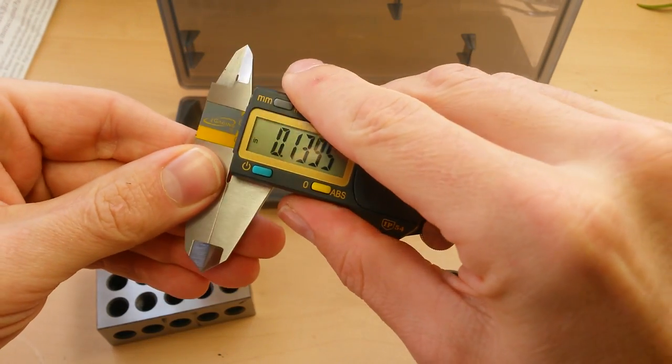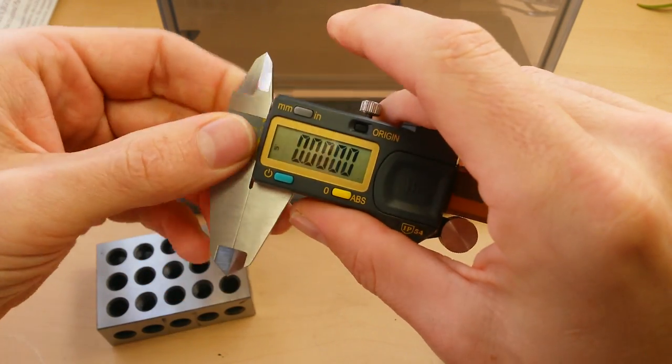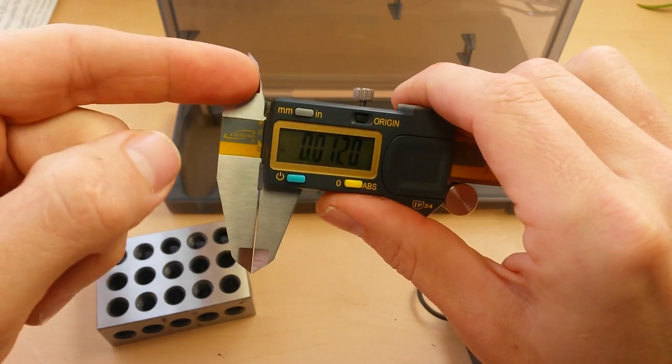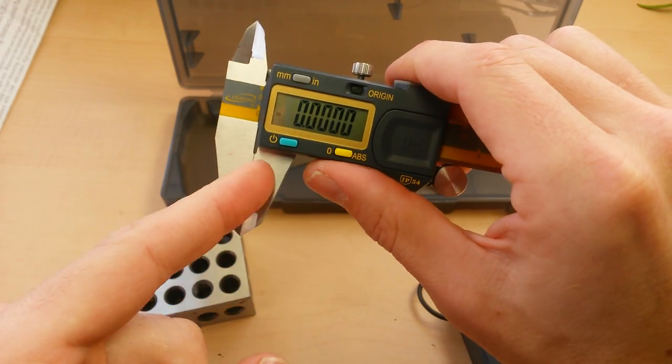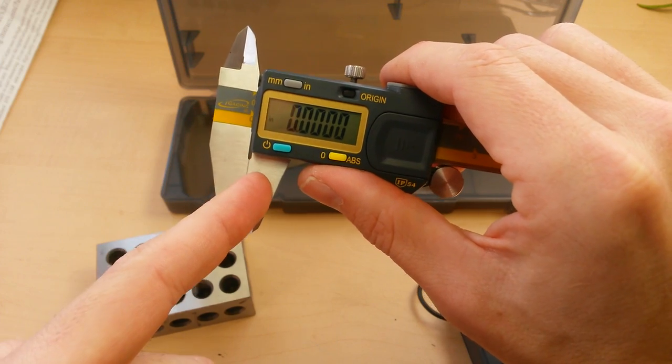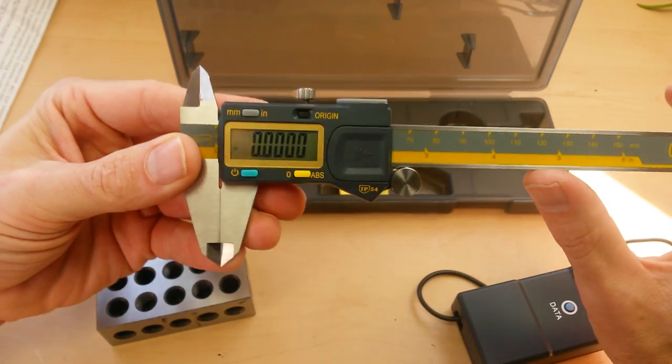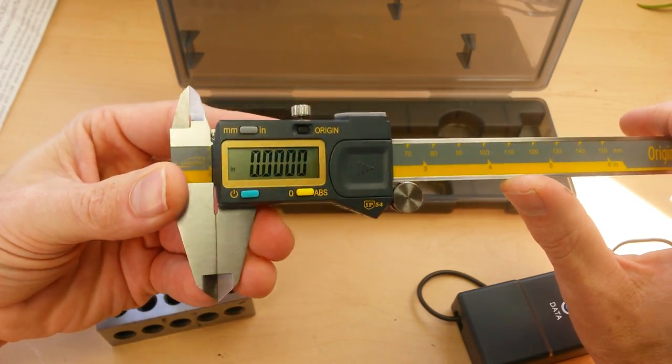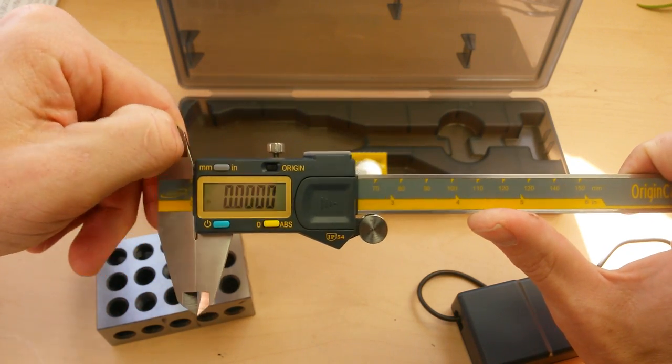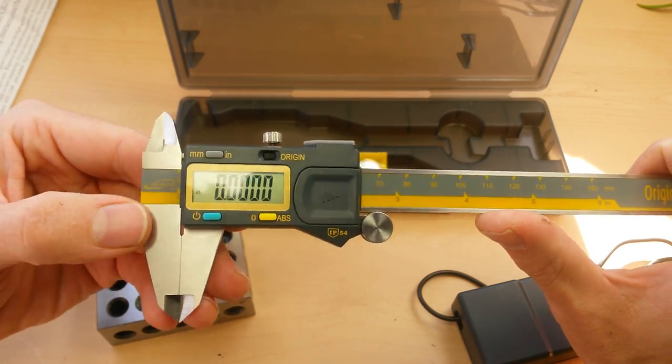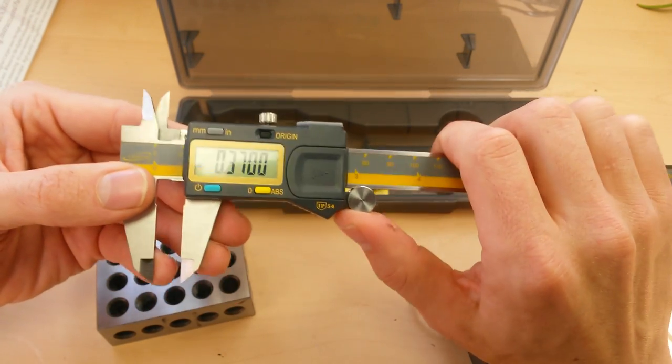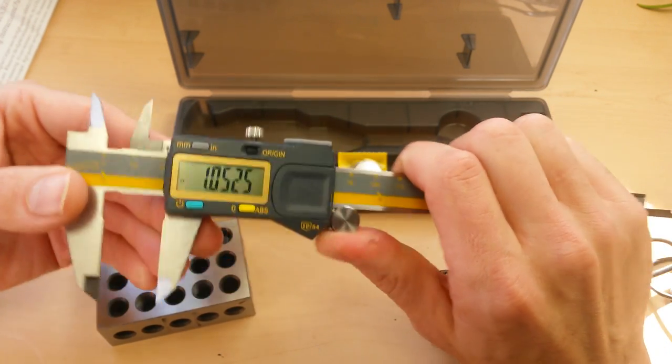There isn't any slop or play between the ruling body and the measuring body. There isn't any gap in the internal measuring face. When outside zero is set, inside zero equals outside zero, which is something I found on the cheaper ones. The internal measuring jaws actually had a small gap between them. And that's why I recommend going with an iGaging or go up to the Mitutoyo or the Starrett.